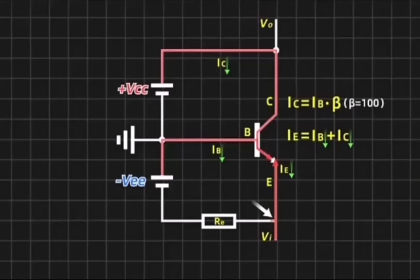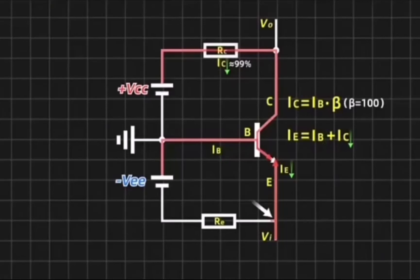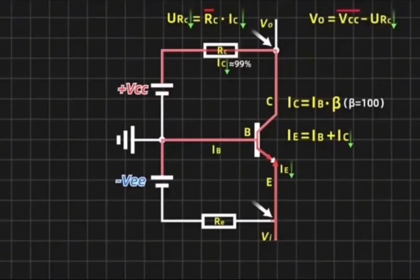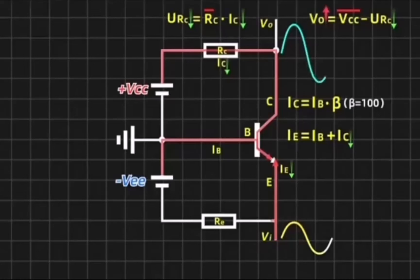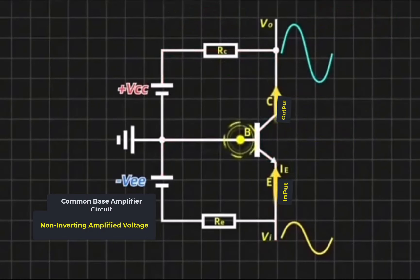IE equals IB plus IC, so both sides will decrease. Since IC equals β times IB, assuming β is 100, then of the total reduction in current signal, 99% is in the reduction of IC. IB accounts for only a very small part and can be ignored. Adding resistor X at the collector, the voltage drop across it equals resistance multiplied by current. Now IC decreases, the resistance value remains unchanged, so the voltage drop across the resistor decreases. The voltage at the output point equals the power supply voltage minus the resistor voltage, and since the power supply voltage remains unchanged, the output voltage increases.